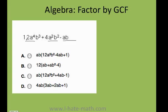What is the greatest common factor between 12a to the 4th b cubed, 4a squared b squared, and ab? Let's start with the numbers. I have a 12, I have a 4, and a half. Remember this is an invisible one.